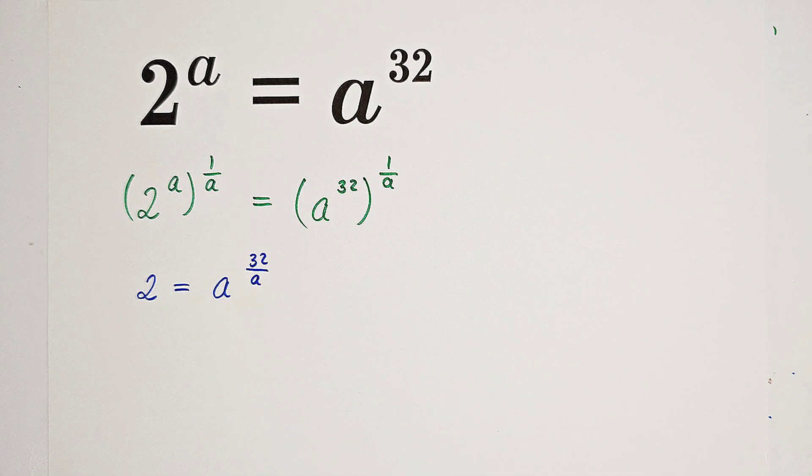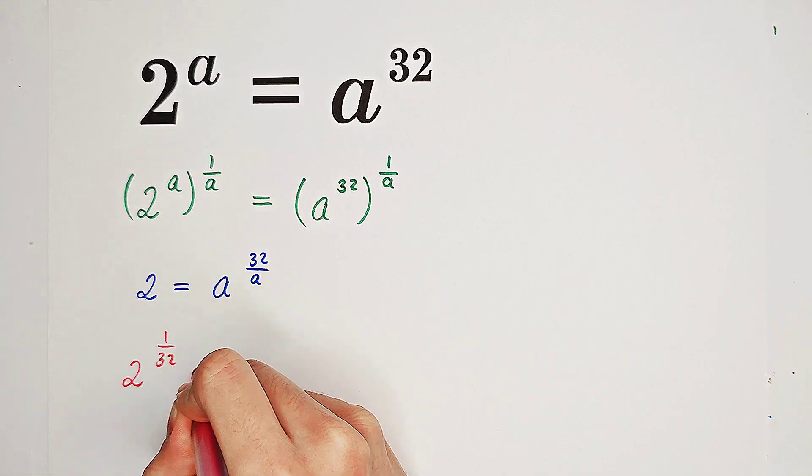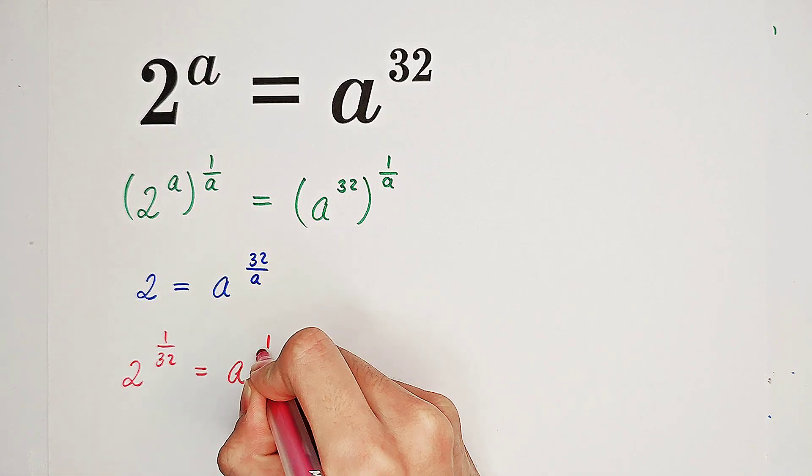Then, let's take a power of 1 over 32 on both sides. On the left-hand side, we have 2 to the power of 1 over 32. And on the right-hand side, we just have A to the power of 1 over A.